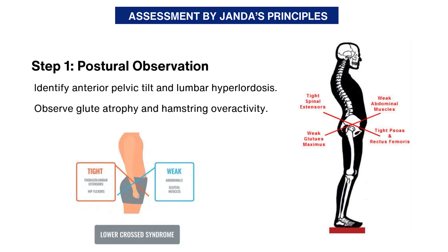Let's go step by step through a comprehensive lower crossed syndrome assessment. Step one is the postural observation, where we are going to check for lumbar hyperlordosis and anterior pelvic tilt.